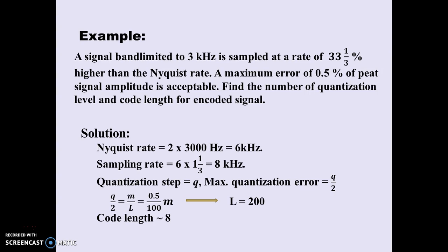Here is a worked example. A 3 kHz signal is sampled at a rate 33⅓% higher than the Nyquist rate, and the maximum quantization error allowed is 0.5% of the peak-to-peak value. The Nyquist rate is 6 kHz, so the sampling rate is 8 kHz. Since maximum quantization error = q/2 = 0.5/100 of peak-to-peak, we calculate L = 200. Choosing n = 8 bits gives L = 2⁸ = 256, which is nearest to 200. Therefore we use 8-bit codes to represent each quantization level.